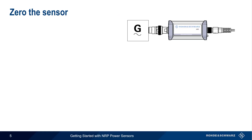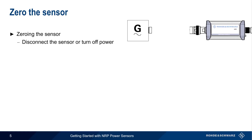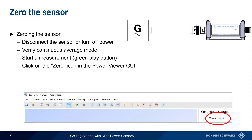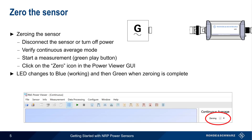Once the sensor is attached and recognized, the next step is to zero the sensor. To zero the sensor, first either physically disconnect the sensor from the device under test, or ensure that the device under test is not producing any RF power. In Power Viewer, verify that Continuous Average mode is selected and start the measurement using the green play button. Then click on the zero icon in the Power Viewer GUI. The LED should turn blue to indicate that zeroing is underway, and then green when zeroing is completed. This usually takes less than 10 seconds, but will depend on the sensor type.